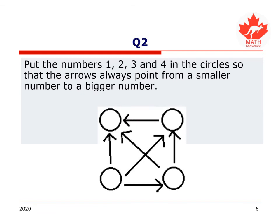Let's try another question. Put the numbers 1, 2, 3, and 4 in the circles so that the arrows always point from a smaller number to a bigger number. Pause the video now, draw this on a piece of paper, and put the numbers 1, 2, 3, and 4 where they belong. Are you ready to solve together? Let's try.